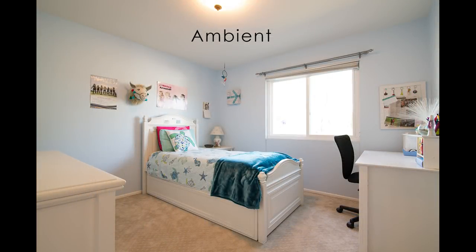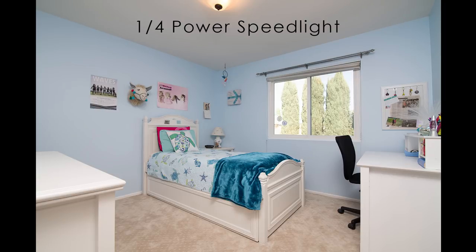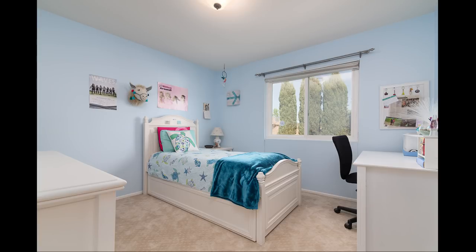Moving upstairs to bedrooms — these are common rooms you can speed through quickly. This first bedroom is light blue with a nice white ceiling to bounce off of, and the ambient is fairly evenly lit. All I had to do was pop off one flash shot at quarter power at ISO 320 f6.3, then I added a window pull, and the final product looks great. That's an easy one — a light-colored room with a light-colored ceiling.